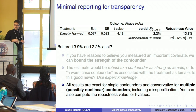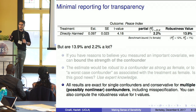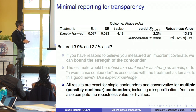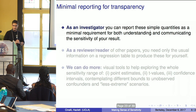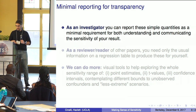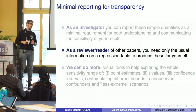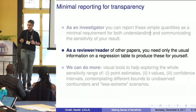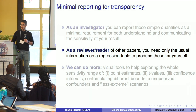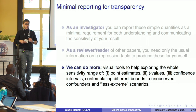This is our minimal reporting suggestion to start spreading sensitivity analysis in empirical work. It answers all four questions: how strong the confounder needs to be, the extreme scenario, a benchmark bound comparing to observed covariates, and everything in a very concise table. As an investigator you use it to report the sensitivity of your results; as a reviewer you can easily compute those quantities yourself — no simulation required, just a simple computation — and start a discussion about sensitivity with peers.